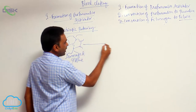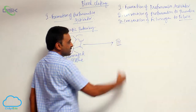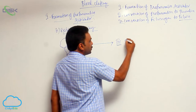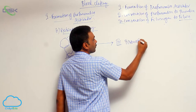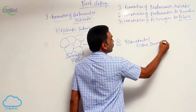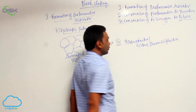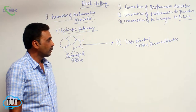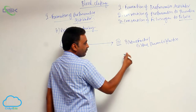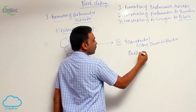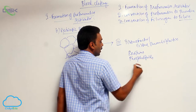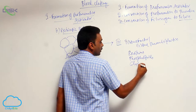From that damaged tissue, Factor III is released. Factor III is also called tissue factor or tissue thromboplastin. Tissue factor is a combination of three things: proteins, phospholipids, and glycoproteins.